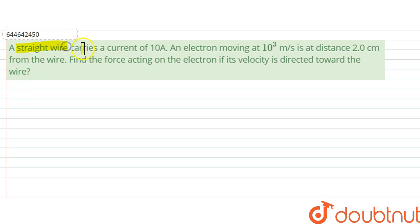The question says a straight wire carries a current of 10 amperes. An electron moving at 10³ m/s is at distance 2 cm from the wire. Find the force acting on the electron if its velocity is directed toward the wire.